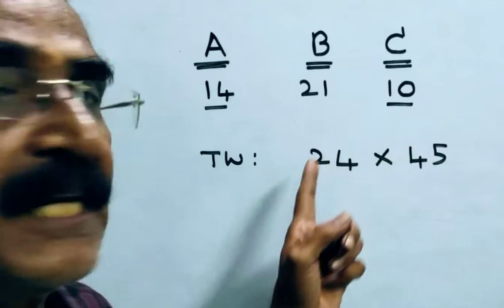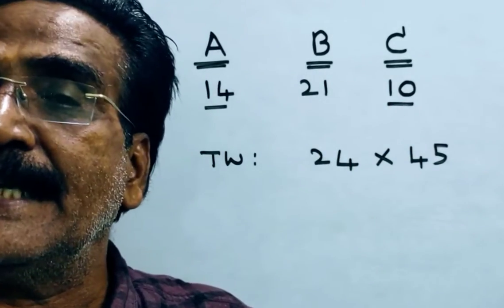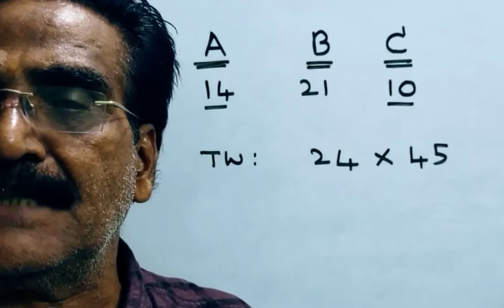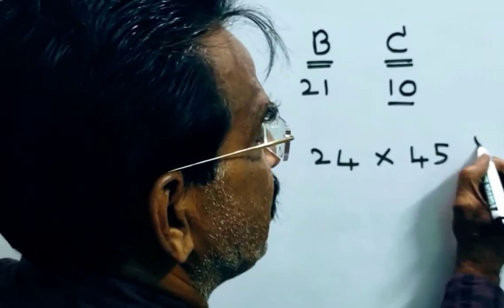A and C together can do 24 units of work per day and they completed the work in 45 days means the total work must be 24 into 45 units.